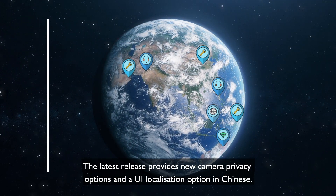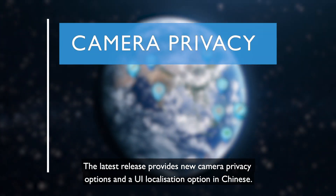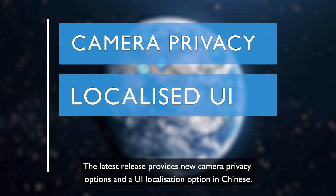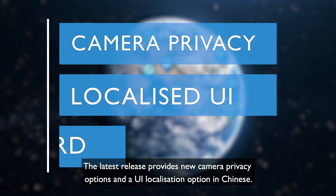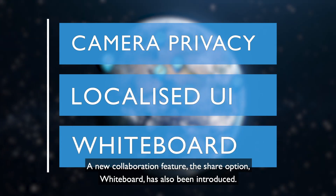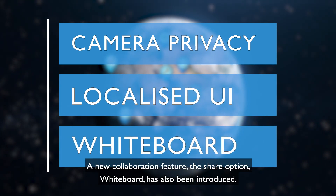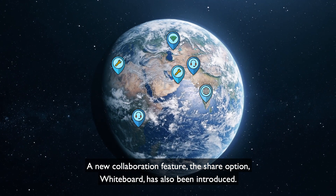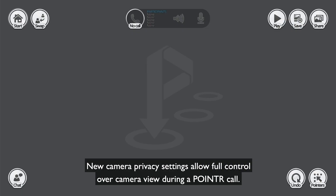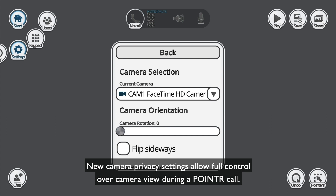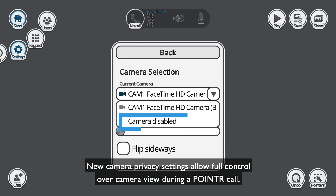The latest release provides new camera privacy options and a UI localization option in Chinese. A new collaboration feature, the share option whiteboard, has also been introduced. New camera privacy settings allow full control over camera view during a Poynter call.